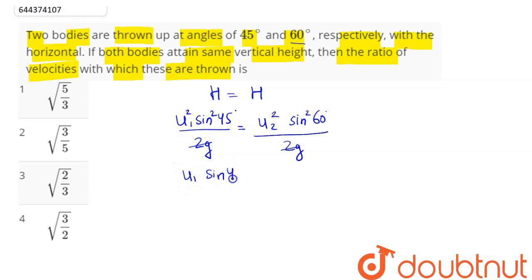Hence u1 sine 45 degree comes out to be u2 sine 60 degree. So sine 45 degree here is 1 by root 2 is equal to u2 into sine 60 is root 3 by 2.